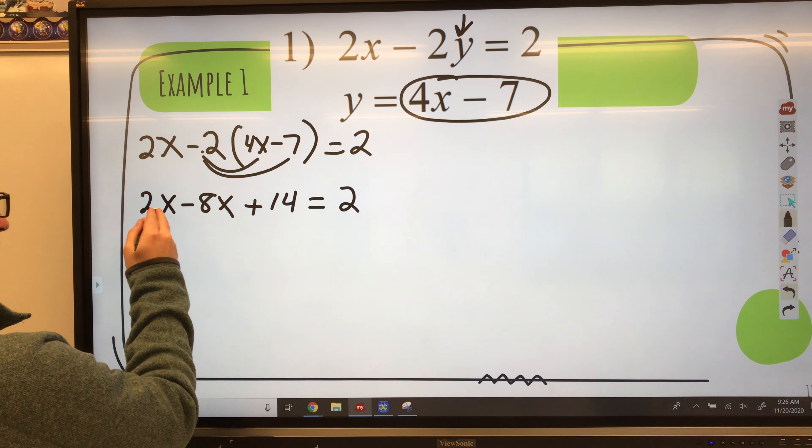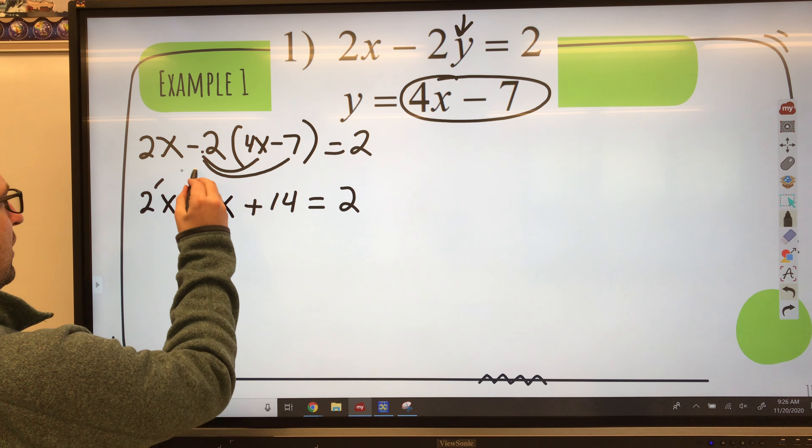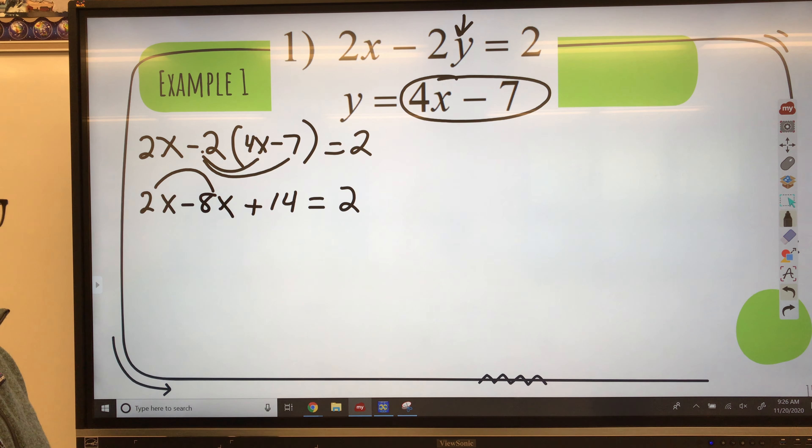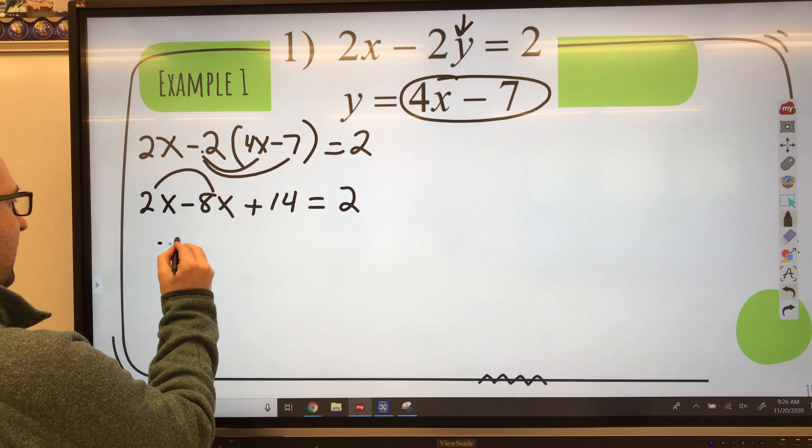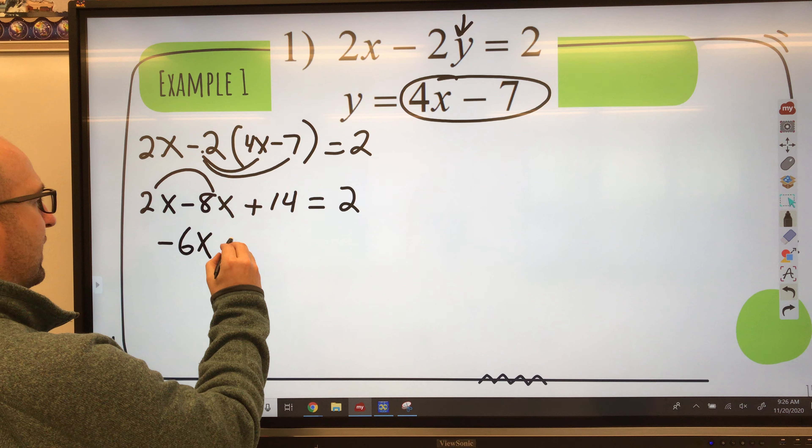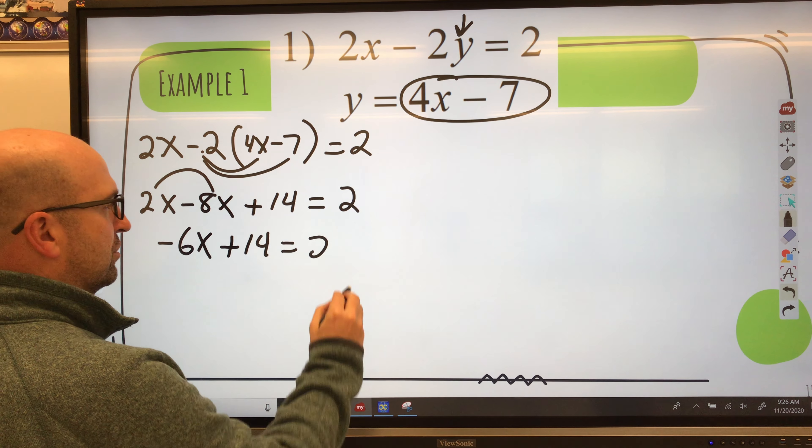Now I notice I have an x and an x. So I have to combine my like terms on that side of the equal sign. And that gives me negative 6x plus 14 equals 2.